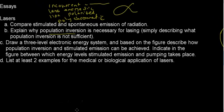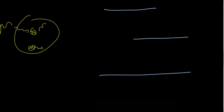Draw a three-level electronic energy system. And based on the figure, describe how population inversion and stimulated emission can be achieved. Indicate in the figure between which energy levels stimulated emission and pumping takes place. This seems maybe like a very long question, but it's rather simple. I have my three energy levels.